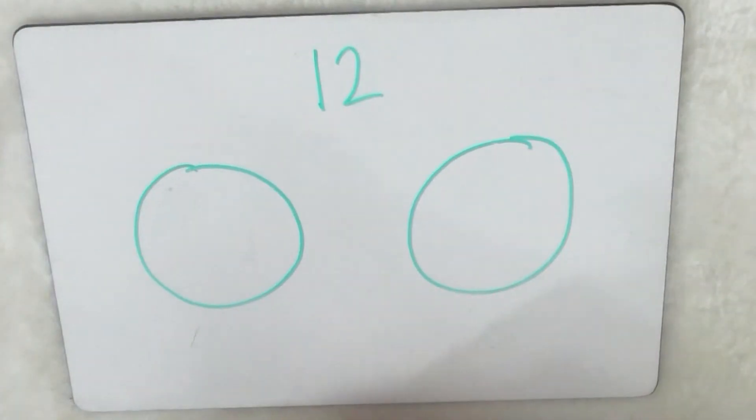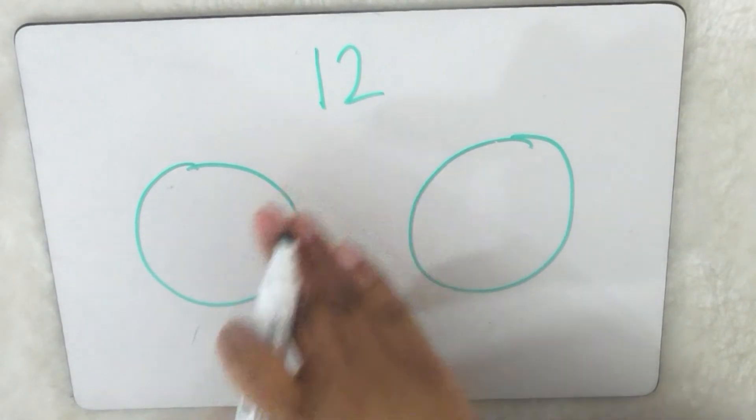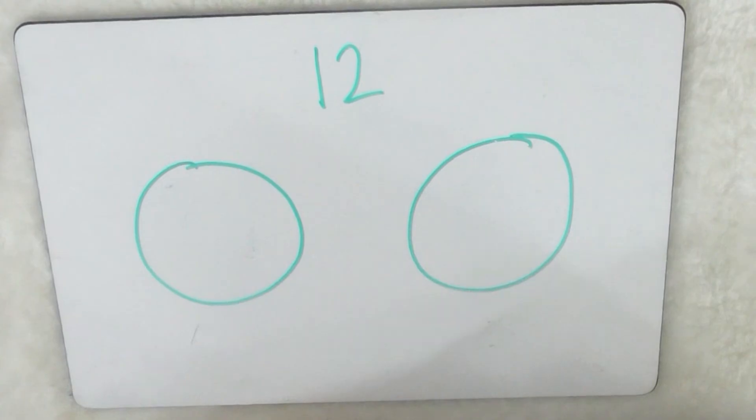Let's try another. Okay, so the next one I would like you to try is sharing 12 between two sharing circles to find out what half of 12 is. Off you go.